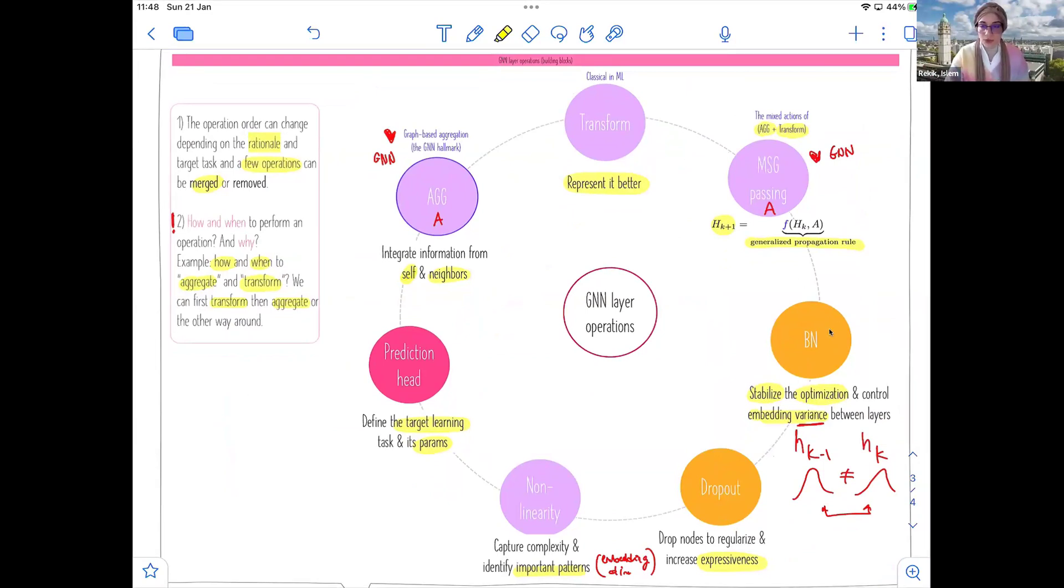Next we will look at a few of these operations like BN dropout, also the concept of batching, how we do batching in graph neural networks.